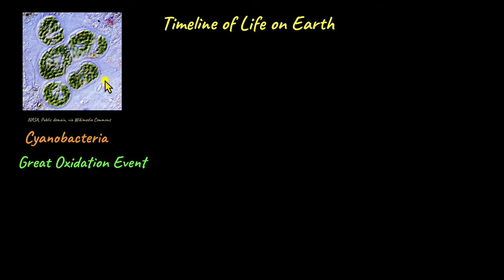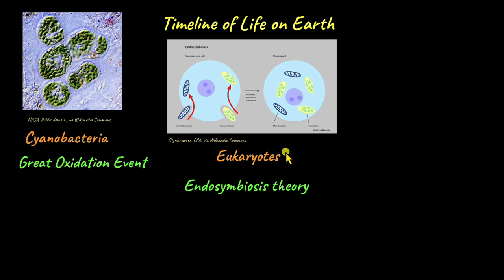Cyanobacteria are photosynthetic organisms capable of releasing oxygen as a byproduct of photosynthesis. As cyanobacteria began to fill the oceans, a lot of oxygen was released into the water and atmosphere. Many anaerobic cells died off, but this led to what scientists call the Great Oxidation Event, which filled the atmosphere with oxygen and led to the development of the ozone layer. The ozone layer protects organisms from harmful UV radiation, allowing many organisms to survive and evolve, eventually leading to the evolution of eukaryotes.